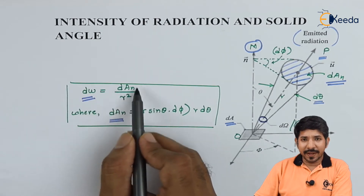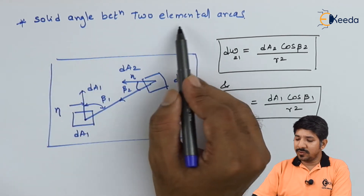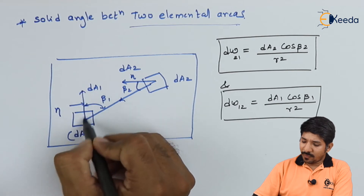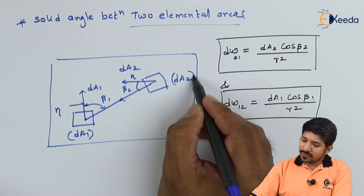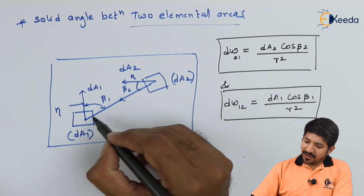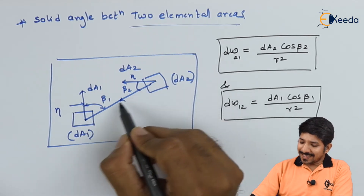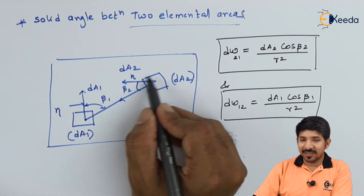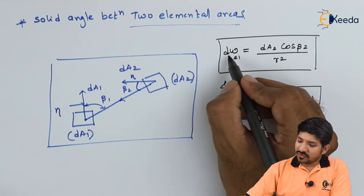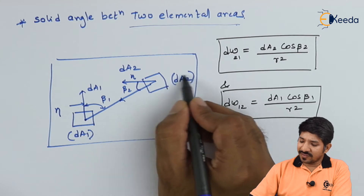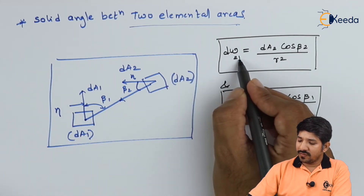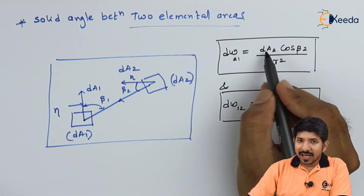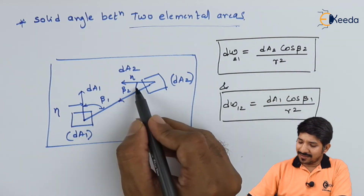A very important topic is the solid angle between two elemental areas. Consider a small elemental area dA1 with its normal, and another area dA2 oriented in a different fashion. A line joining the two center points makes angles β1 and β2 with the normals to their respective surfaces. The solid angle of surface 2 at surface 1 — which is what the subscripts 2 and 1 indicate — can be given as dA1 times cos(β2) upon the distance squared r.